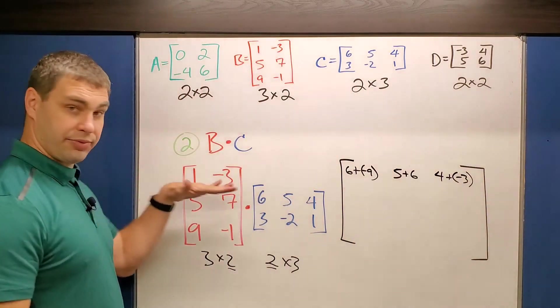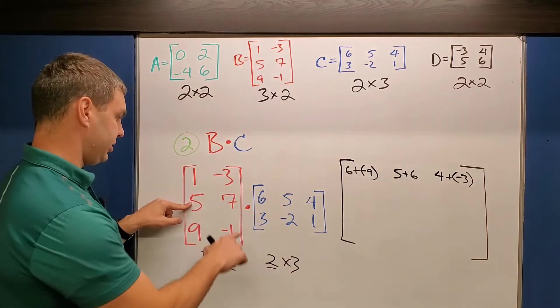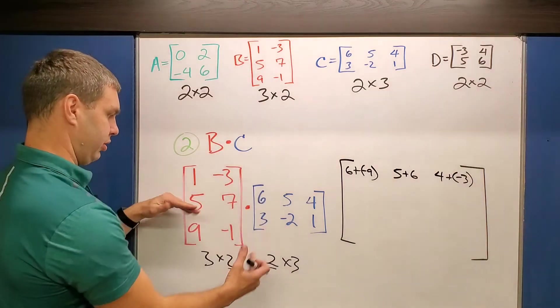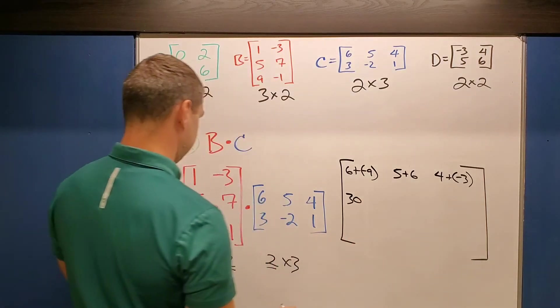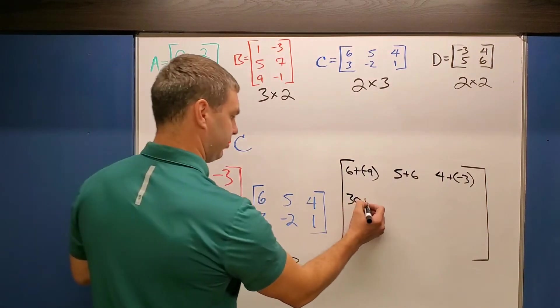And then let's do it for the other two, 5 times 6. So my second row times my first column, 5 times 6 is 30. And then 7 times 3 is 21 plus 21.